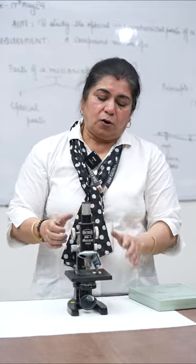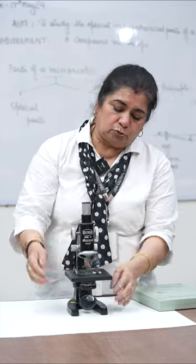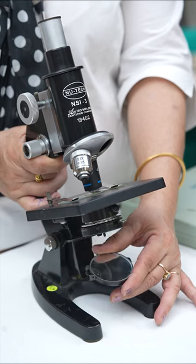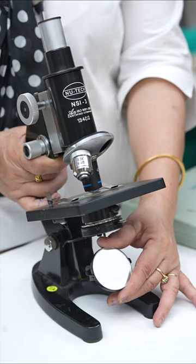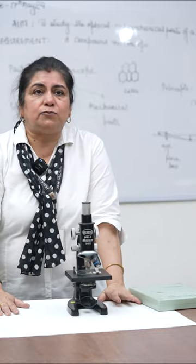A microscope has two types of parts: one, the mechanical parts, and the other, the optical parts — which include the lenses and the reflecting mirror present below the microscope.